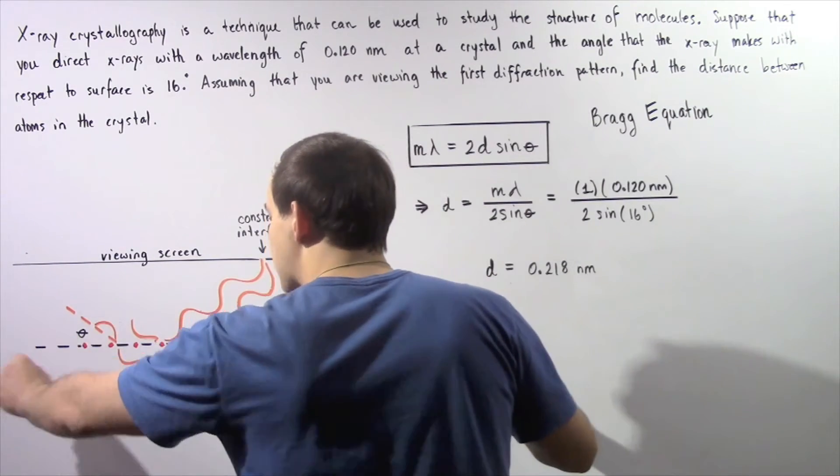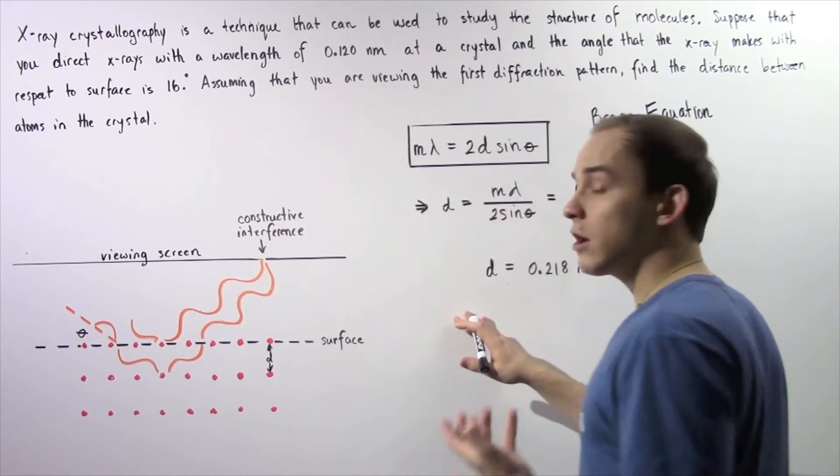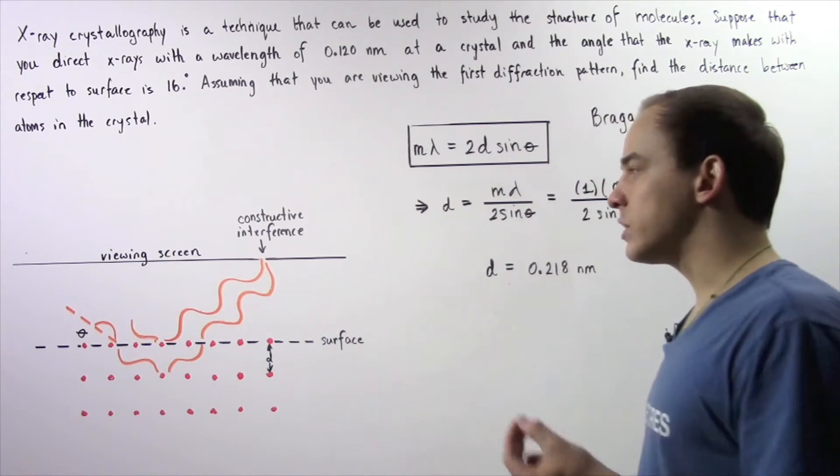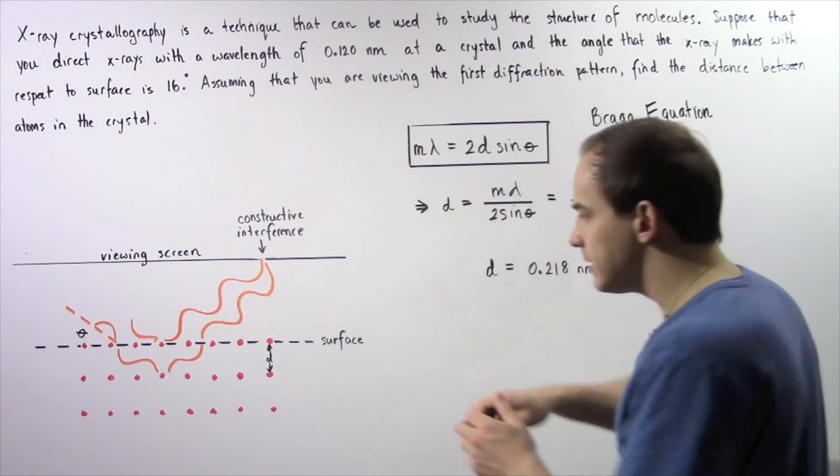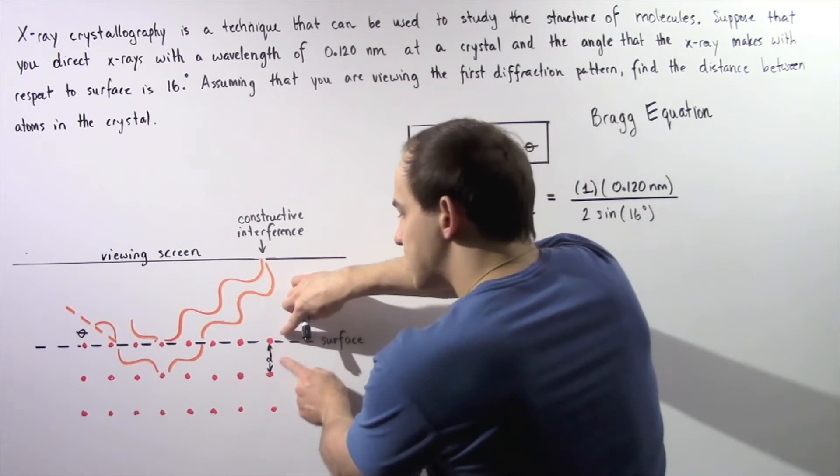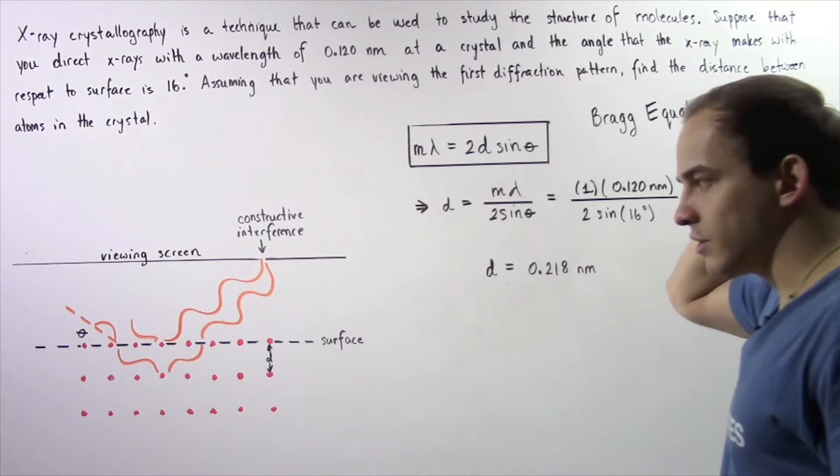This dashed line represents the surface of our crystal, and these red dots represent the atoms of our crystal. We want to find the separation distance d between any two atoms as shown in the diagram.